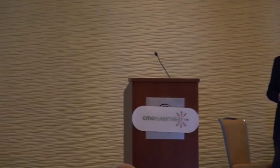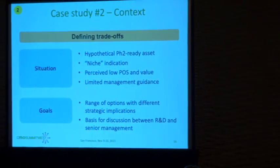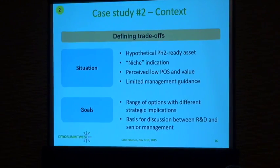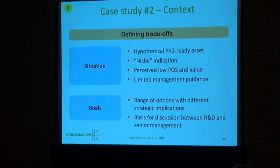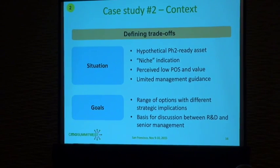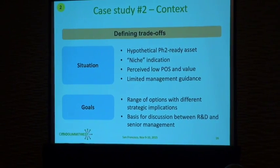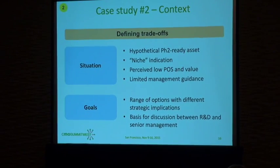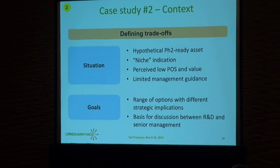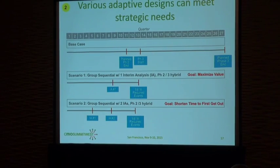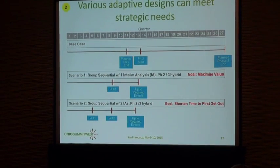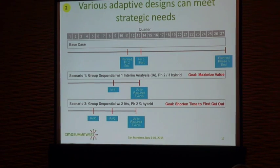The second case study is much shorter — it's really about a large pharma and is more specifically about trade-offs. This is a hypothetical asset: a niche asset, low probability of success, limited management guidance. They had a range of options and wanted to set up a set of designs so they could talk with management. I'm giving only two of the adaptive designs out of many. They had a base case — a fixed design with a typical phase two and phase three, it's an oncology overall survival trial, a small niche product.